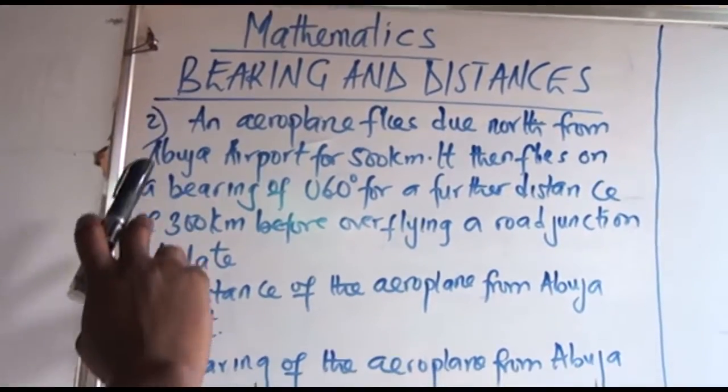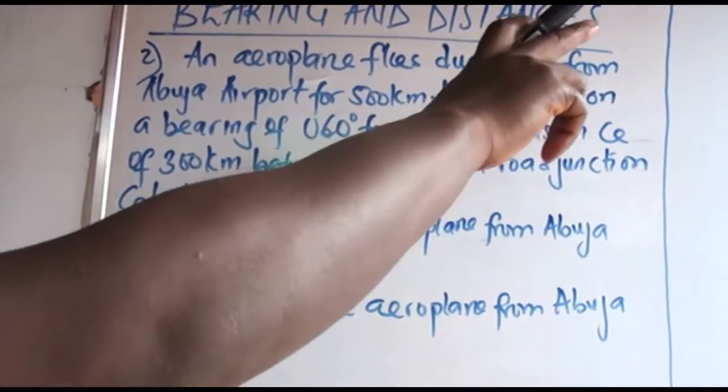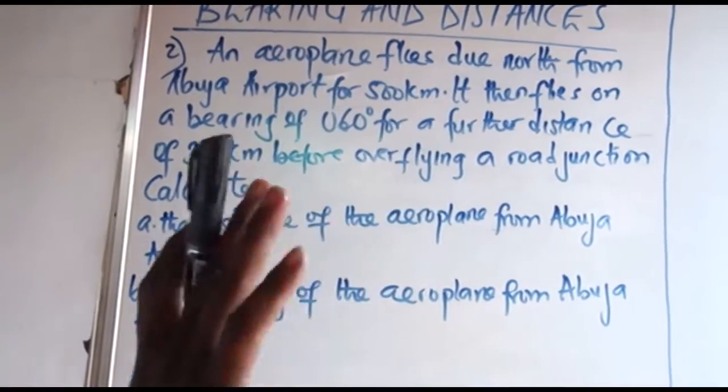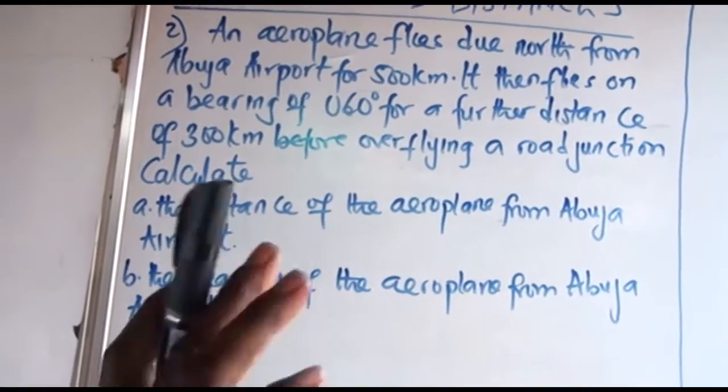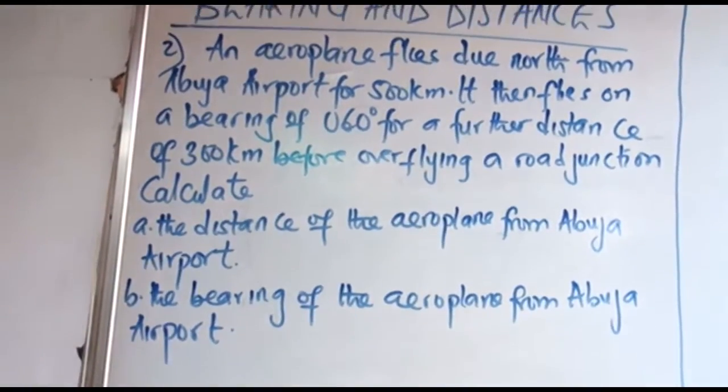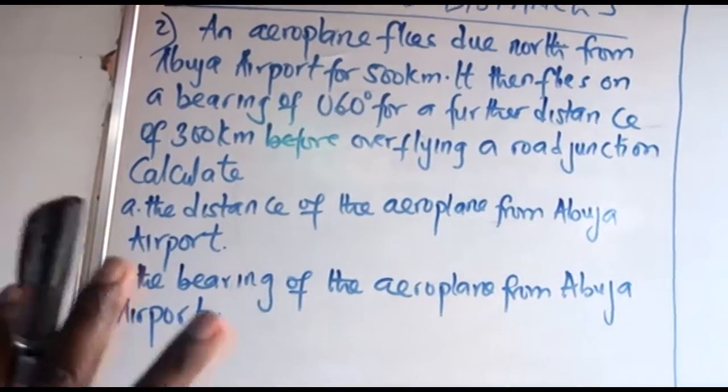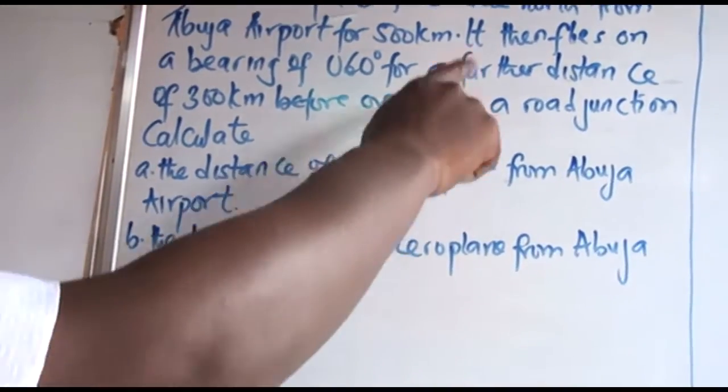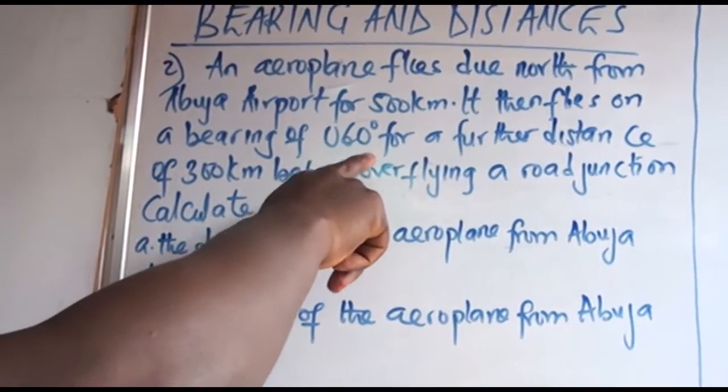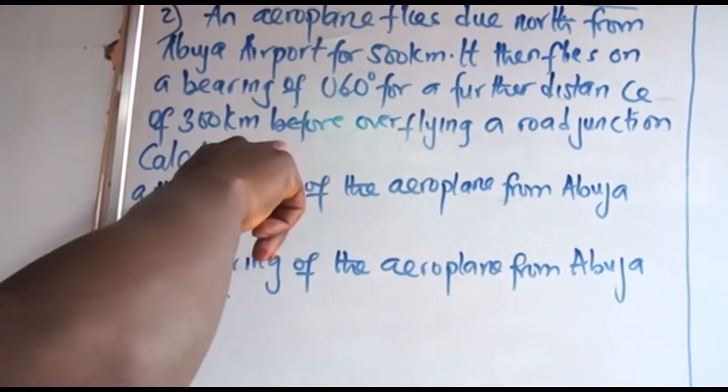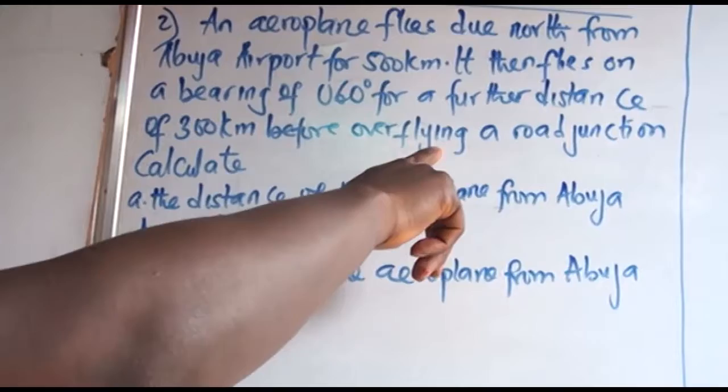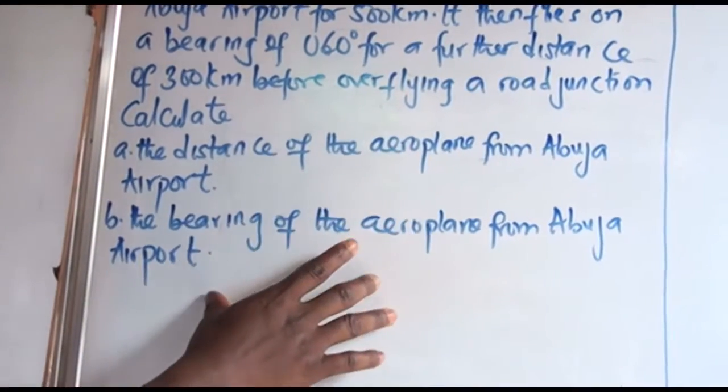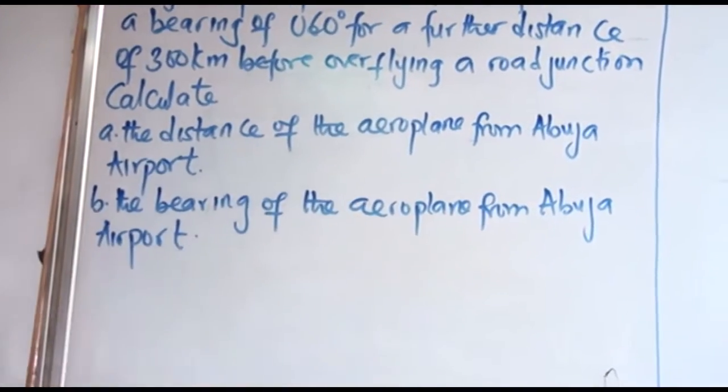Here is the question: An aeroplane flies due north from Abuja airport for 500 km. Today we are given km, the distance direct, unlike the previous class where we were given velocity. It then flies on a bearing of 060 degrees for a further distance of 300 before overflying a road junction. Then we have to calculate the distance and as well as the bearing of the aeroplane from the airport.